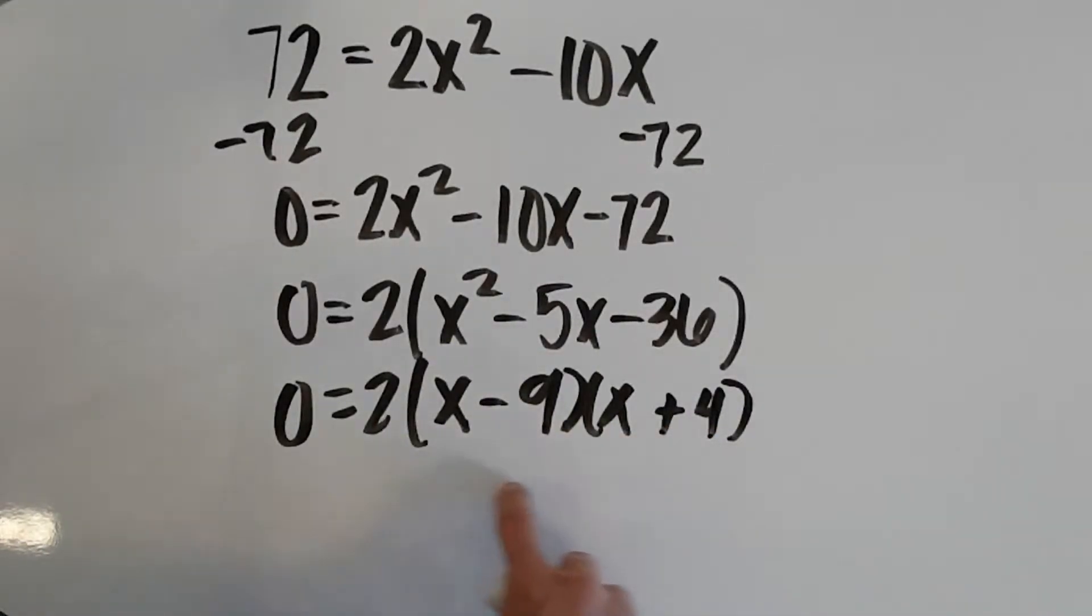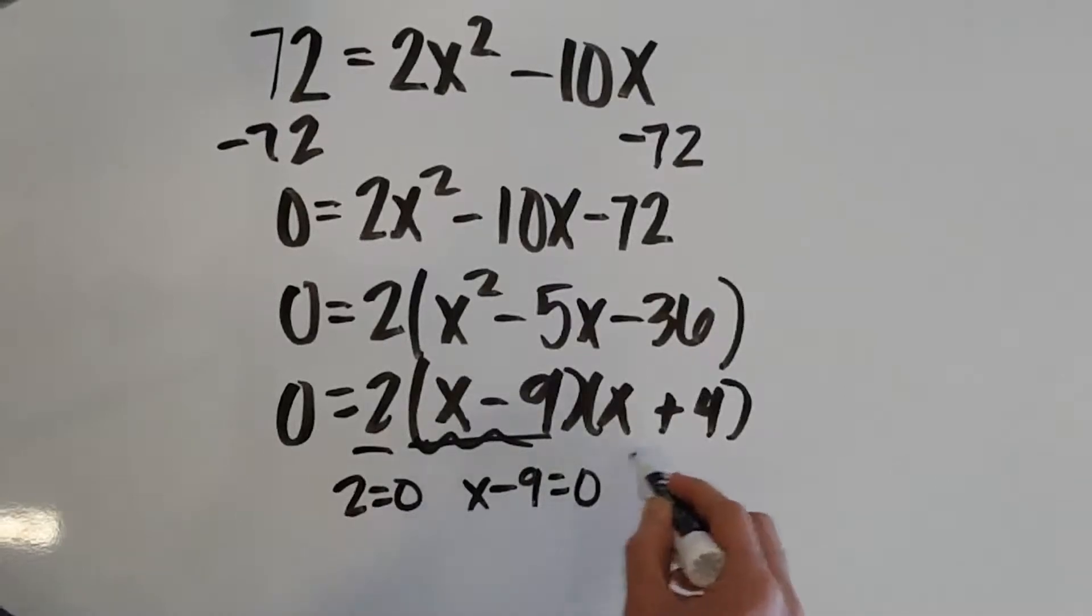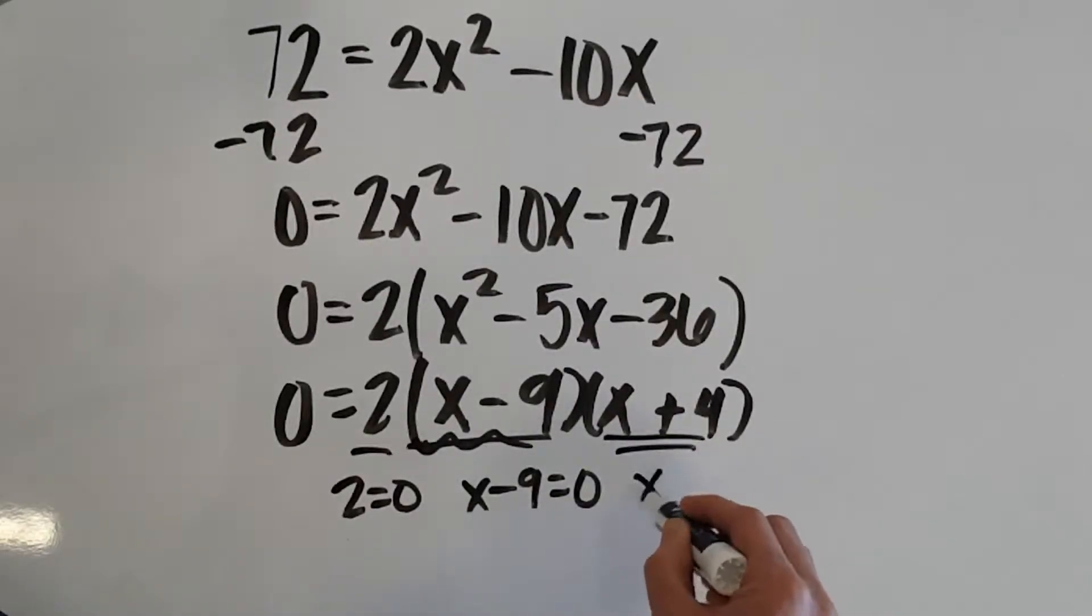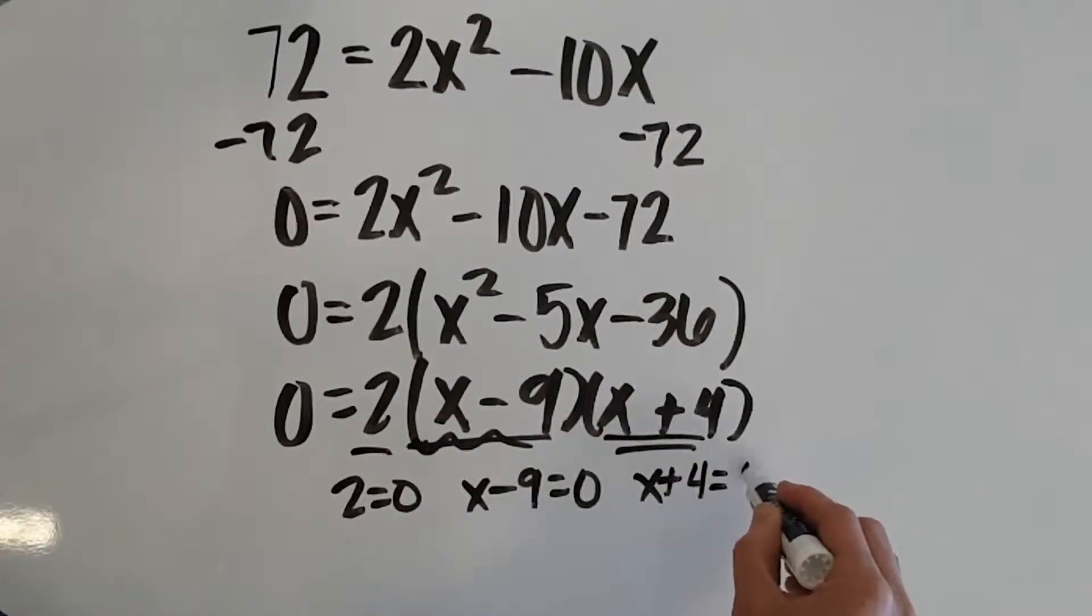So, now that we're completely factored, again, we're going to set each factor equal to 0 because I know if I multiply something by some other stuff and get 0, at least one of those factors has to be equal to 0. So, I set 2 equal to 0. I set x minus 9 equal to 0. And I set x plus 4 equal to 0, my three different factors. Well, I'm going to solve each of these.